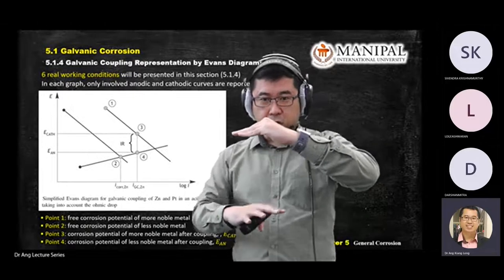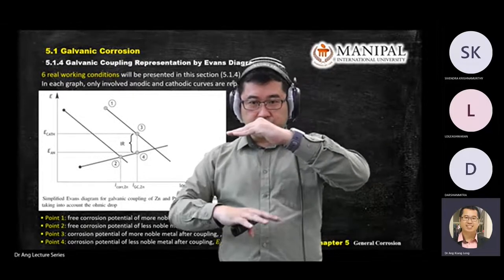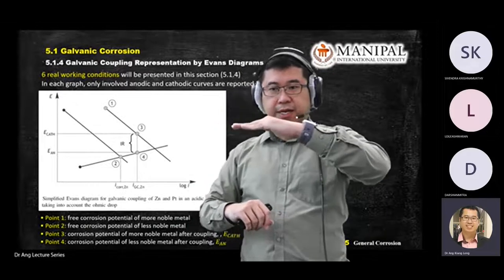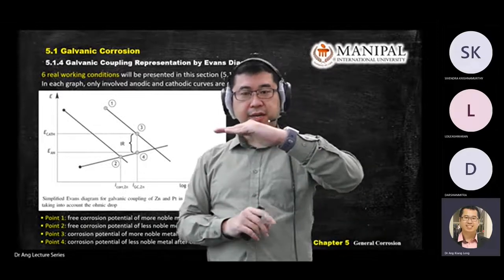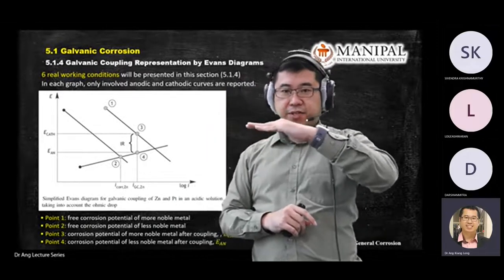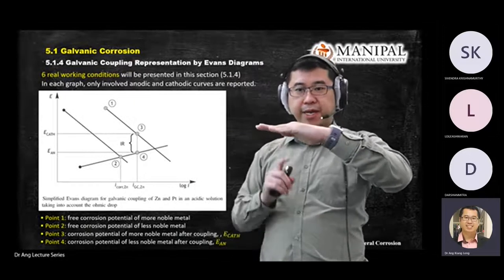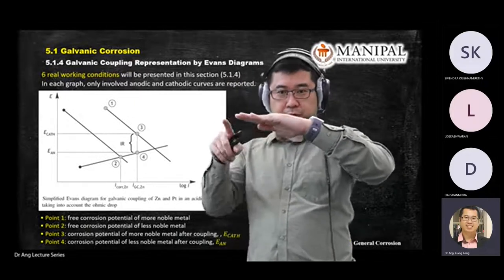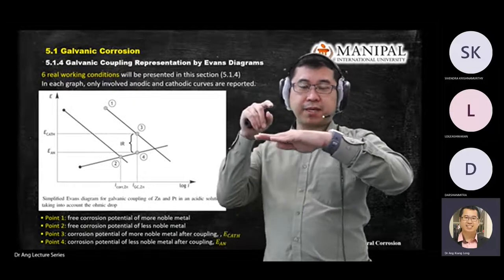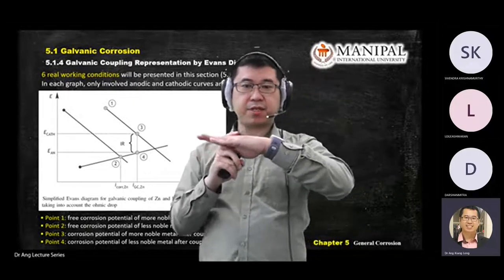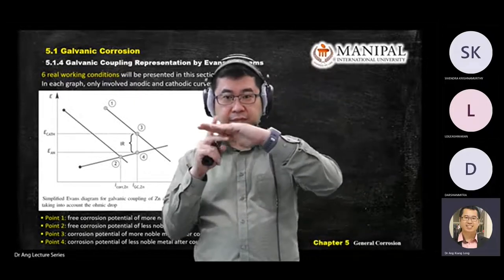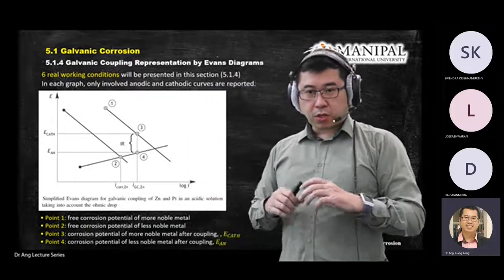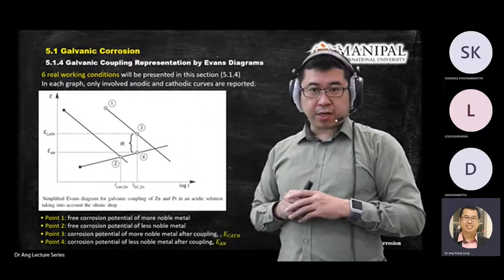The higher nobility metal becomes the cathode — it just lies there and receives electrons. Nothing happens to the element itself; something happens only at the borders. This is how galvanic corrosion happens. In tests or the final exam, these two metals will be placed inside a solution.